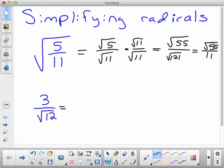Okay, on this problem though, 12 can actually break down. So you've got 3 and 4, 2 and 2. There's a pair of 2s. So you'd have 3 over 2 root 3 if you simplified that first.